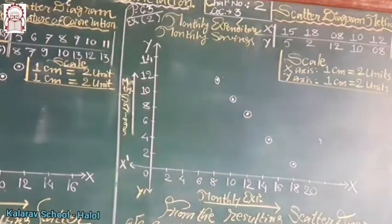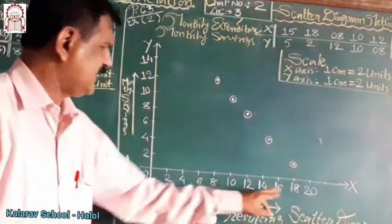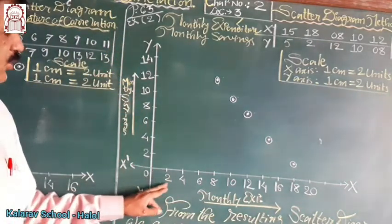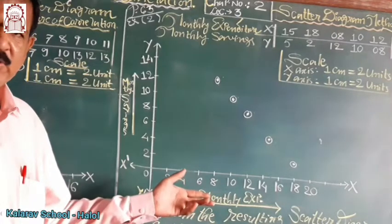Therefore, we have to draw the diagram by taking monthly expense on x-axis and monthly saving on y-axis. Also, we have to check, 2, 4, 6. You may change the measurement also, scale also change.